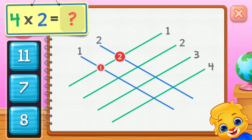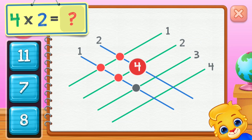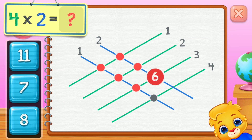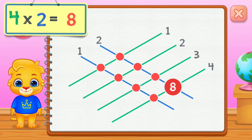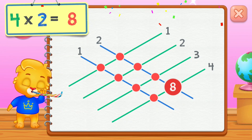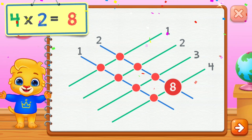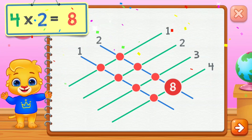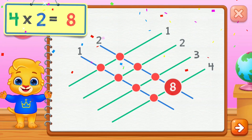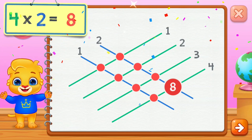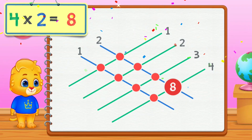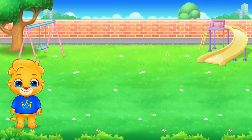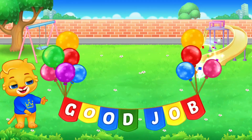1, 2, 3, 4, 5, 6, 7, 8. 4 times 2 equals 8. Good job!